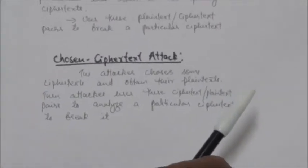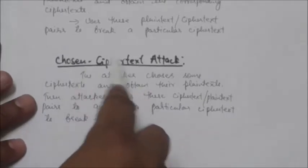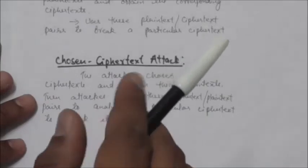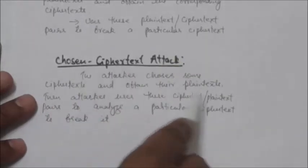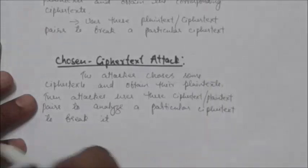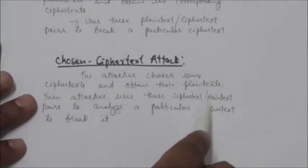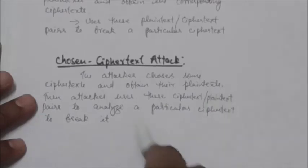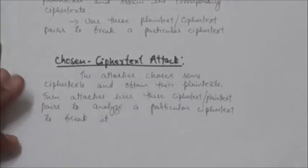The final cryptanalysis attack is the chosen ciphertext attack. In this case, the attacker chooses some ciphertext, obtains their corresponding plaintexts, and then uses these ciphertext-plaintext pairs to analyze and break a particular ciphertext.